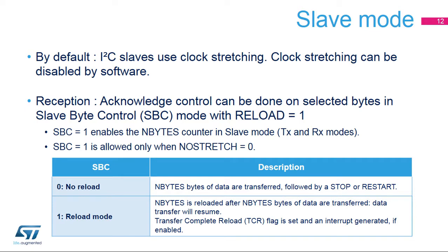By default, the I2C slave uses clock stretching. The clock stretching feature can be disabled by software. In receive mode, the Slave Acknowledge on Received Byte behavior can be configured when Slave Byte Control Mode is selected, together with the Reload Bit being set. When the SBC bit is set, the number of bytes counter is enabled in slave mode. Clock stretching must be enabled when Slave Byte Control is enabled.